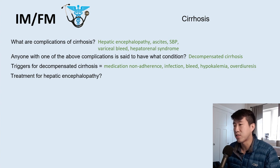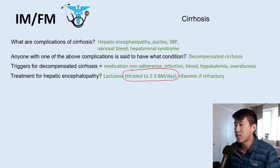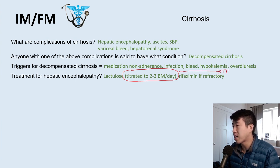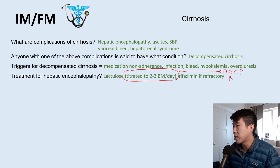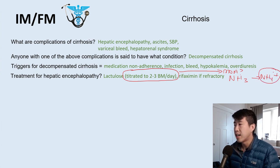The main treatment for hepatic encephalopathy is lactulose, titrated to two to three bowel movements per day — a frequently asked question on medicine rotation. You can add rifaximin if refractory. The mechanism of lactulose: it's a sugar digested by gut bacteria that releases acid, acidifying the colon. More H+ ions convert ammonia (NH3) into ammonium (NH4+), which is not absorbed by the colon, thus reducing total body ammonia.